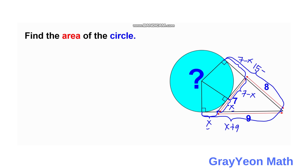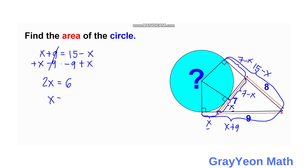So this becomes 15 minus x. We say that the lower tangent point length x plus 9 is equal to the upper tangent point length 15 minus x. Adding x to both sides and subtracting 9, we have 2x equals 6, so x equals 3. So this segment is 3, this is 3 also, and 7 minus 3 gives us 4 for both remaining segments.